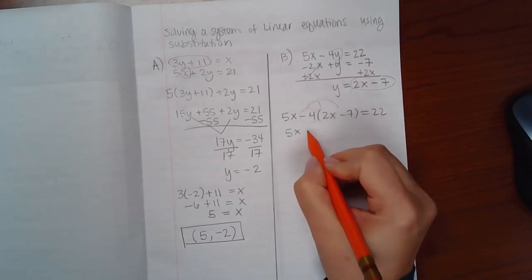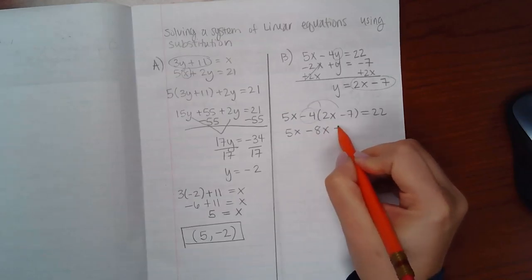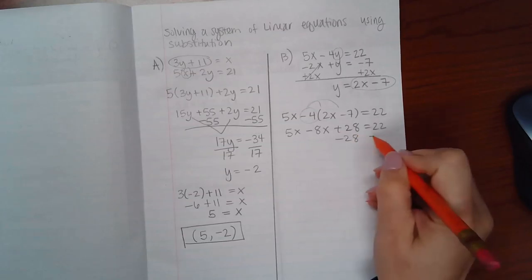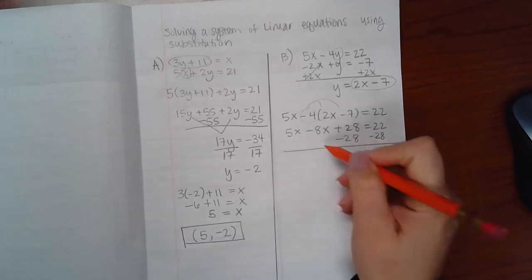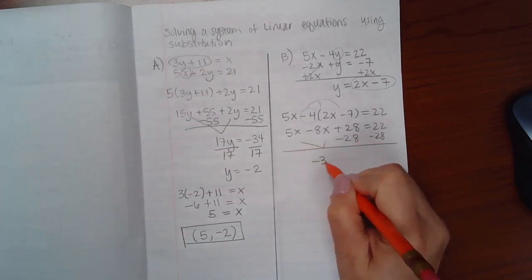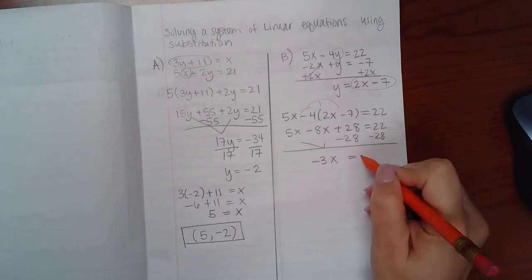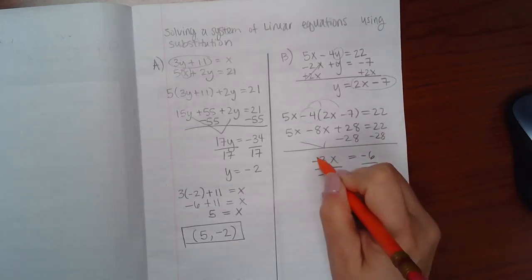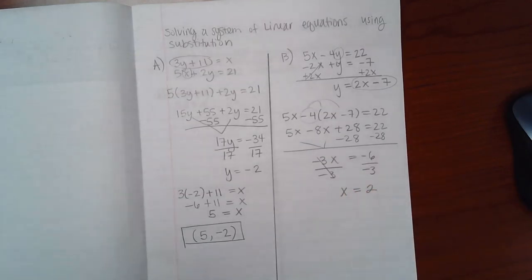I get 5x minus 8x plus 28 equal to 22. And then if I minus 28 on both sides, these two together make minus 3x. And that makes negative 6. Divide by negative 3 to solve for x. And we get that x is positive 2.